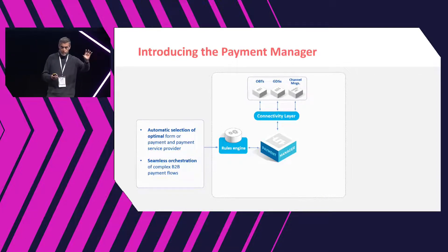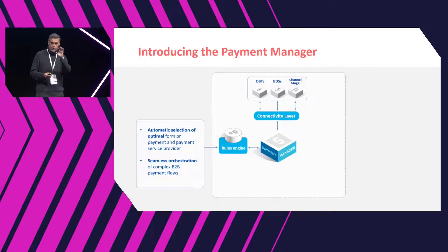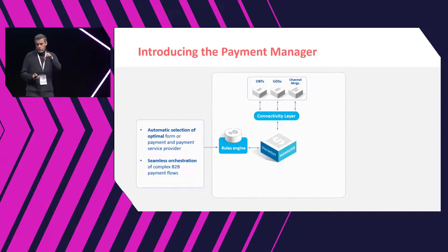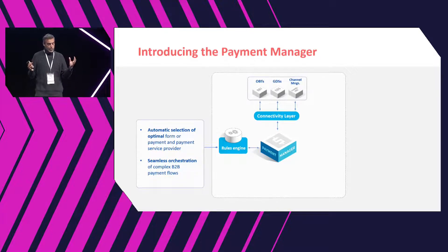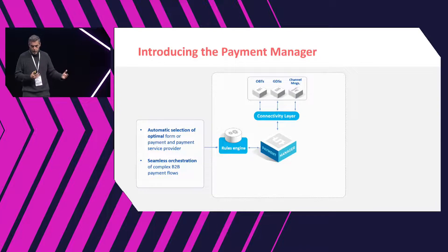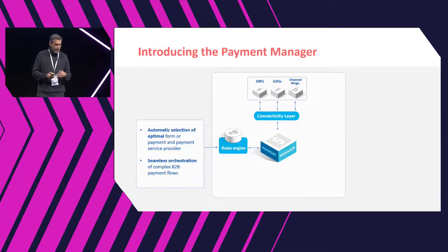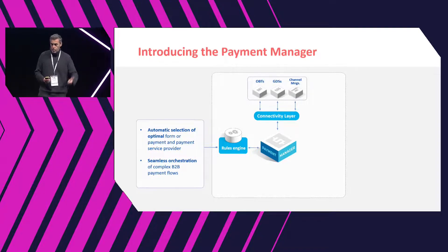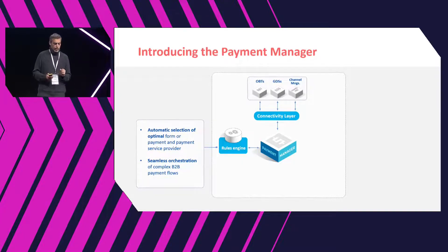You might want to pay with a VCC but have 20 different payment service providers available — some provide credit, some don't; some support certain currencies, others don't; some operate in certain markets, some give a very nice rebate and some don't. The rules engine combines all that information based on each customer's pre-configured preferences. Based on that, it determines how to orchestrate a payment: what form of payment, what payment service provider, whether there's an invoicing requirement, whether there's a micro-hedging requirement. All of that is decided by the rules engine and sent to the payment manager as a payment instruction.